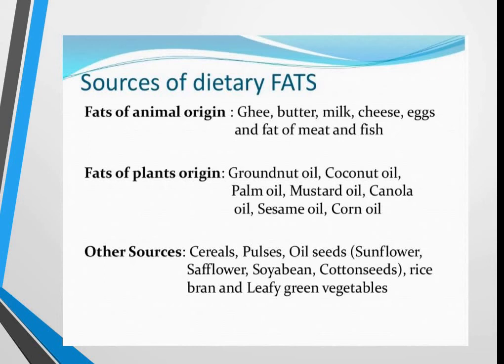Other plant sources include cereals, pulses, and oil seeds such as sunflower, safflower, soybean, cottonseed, rice bran, and leafy green vegetables. From these sources we can obtain dietary fats.